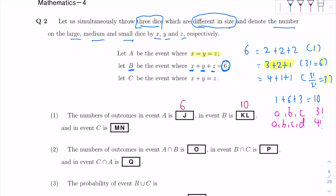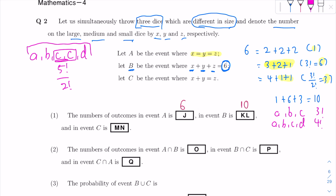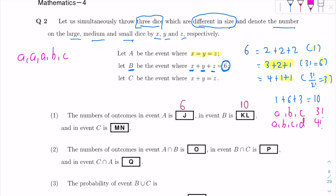For 4+1+1, it's 3 factorial divided by 2 factorial because you have two of the same character — 1 and 1. If you have characters like A, B, C, C, D, the total number of ways to rearrange is 5 factorial over 2 factorial. You take the total number of characters factorial and divide by the factorial of the repeating count. For example, with A, A, A, B, C, C you'd have 6 factorial over (3 factorial × 2 factorial).